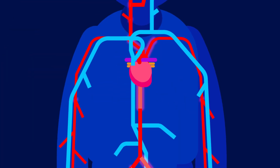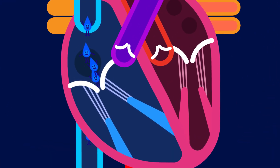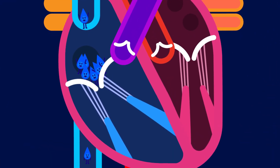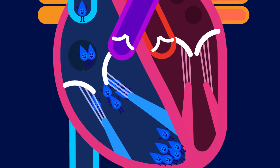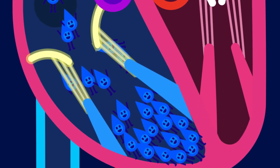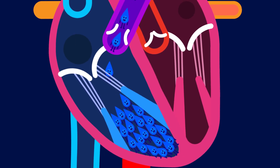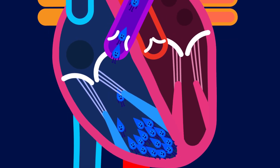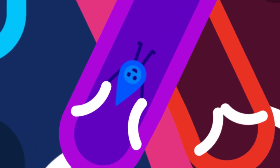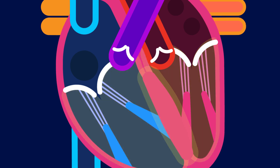The left ventricle pumps oxygenated blood via the aorta to all parts of the body except the lungs. The right atrium receives deoxygenated blood and pumps blood to the right ventricle. The tricuspid valve prevents backflow of blood to the right atrium. The right ventricle pumps deoxygenated blood to the lungs via the pulmonary artery, where the semilunar valves prevent backflow of blood.